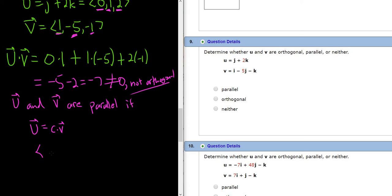So let's try to do it. Let's take u, which is 0, 1, 2, and let's try to solve this equation. So if we get an answer to this equation, they're parallel. If we don't get an answer, they are not parallel. So to figure out if they're parallel, you just write this down, and if you can find c, they're parallel. If you can't, it's not parallel.